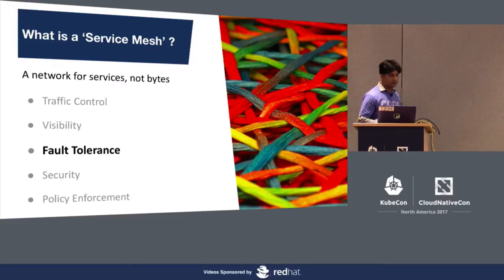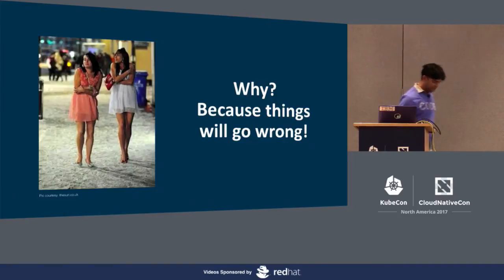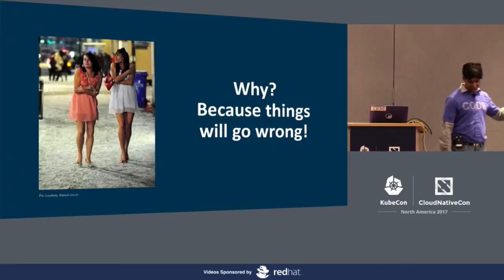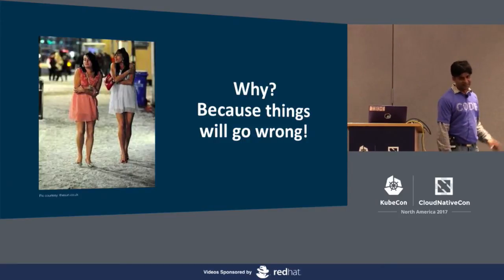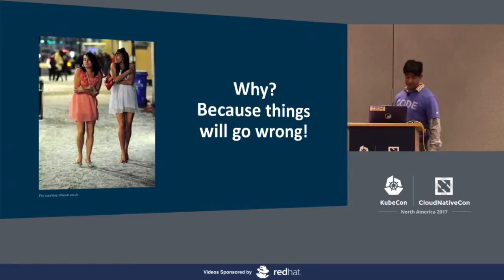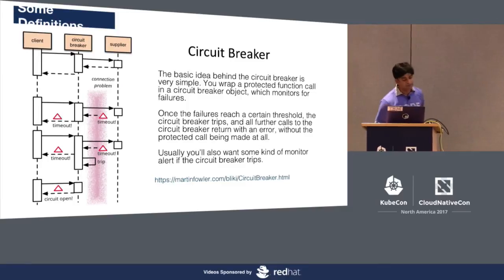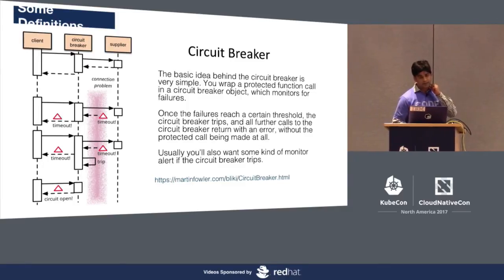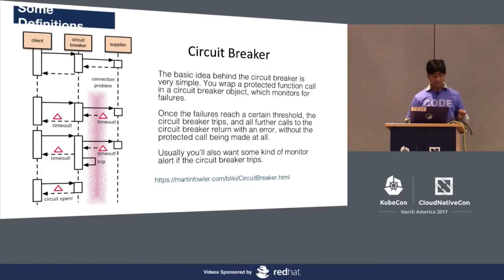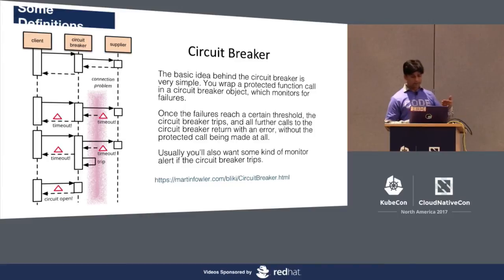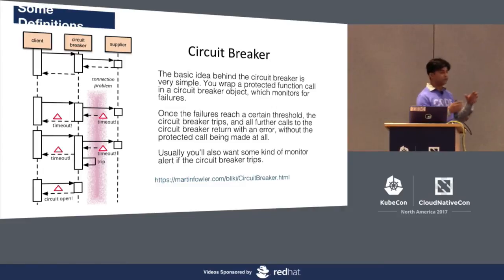Now let's look into fault tolerance. If you're questioning why we need fault tolerance — it's because things will go wrong. The basic idea behind a circuit breaker is simple: you wrap your function call inside a circuit breaker object, and once the failure reaches a certain threshold the circuit breaker trips, so any further call returns with an error without overloading your protected method.